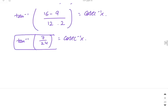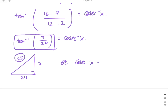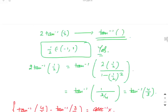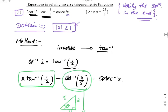Using a triangle with opposite = 7 and adjacent = 24, hypotenuse = 25 by the Pythagorean theorem. So cosec⁻¹(x) = cosec⁻¹(25/7), which gives x = 25/7. Verifying: this value satisfies the original equation. So x = 25/7 is the final answer. Is it clear to all?